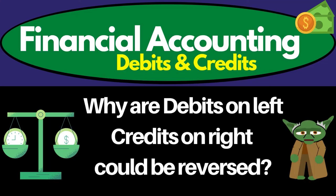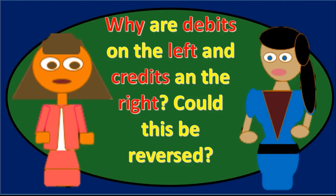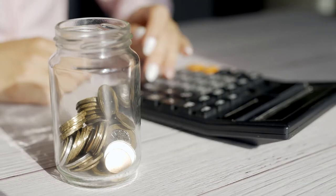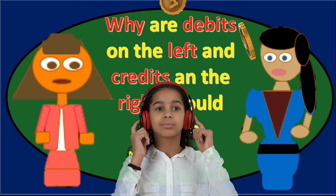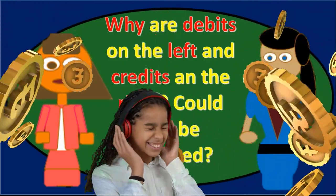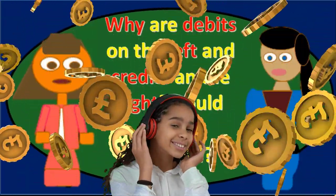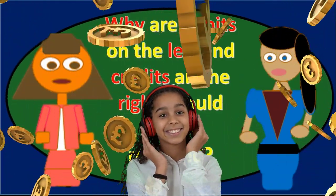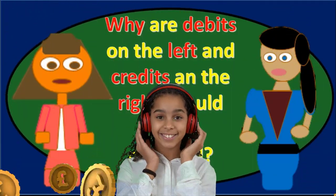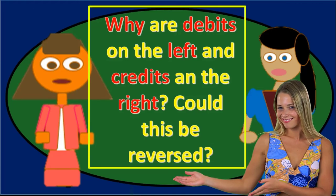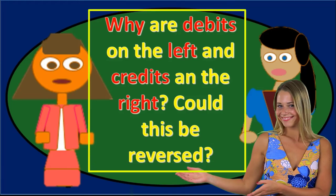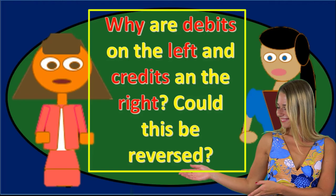In this presentation we will discuss the question of why are debits on the left and credits on the right. Could this be reversed? This essay question could also just be phrased as: what are debits and credits? In describing that answer, it would help to get into the detail of what it means for a debit to be on the left and a credit on the right, why this is the case, how it came to be, and whether it could be reversed.